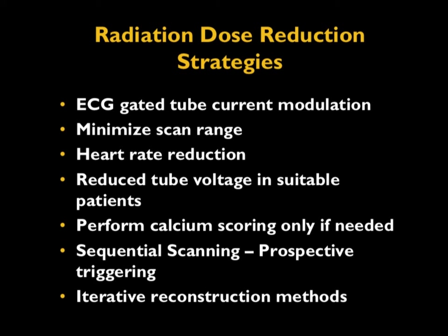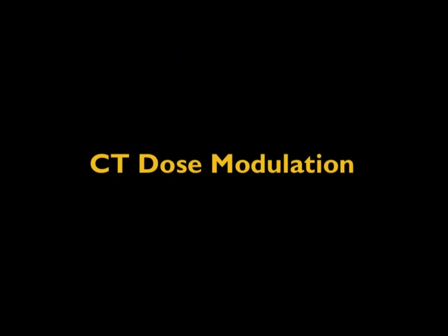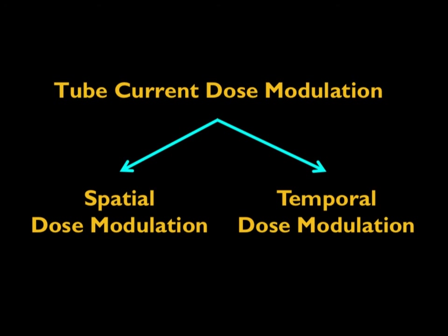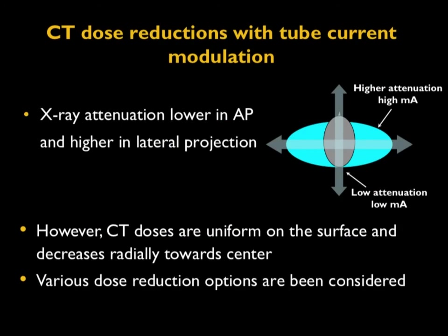CT dose modulation includes two types: spatial dose modulation and temporal dose modulation. Spatial dose modulation accounts for the fact that patients are not circular — there is higher attenuation in the lateral direction and lower attenuation in the AP direction. The tube current is lowered based on patient thickness. However, the most commonly applied method in cardiac CT is temporal dose modulation.